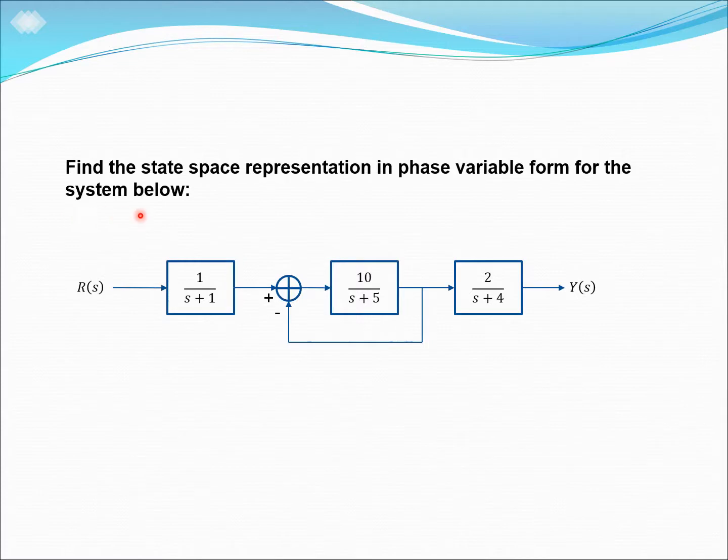The question wants us to find the state space representation in phase variable form for the system below. Given the system over here in the form of a block diagram with an input and three subsystems, and we have a single closed-loop subsystem over here.